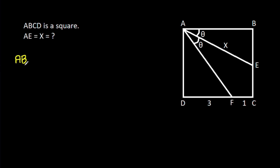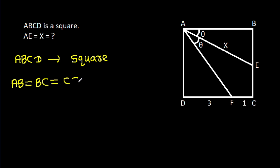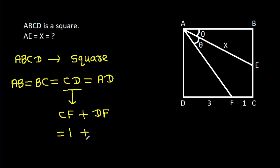ABCD is a square, which means AB = BC = CD = AD. And CD is CF plus DF, which is 1 plus 3, that will be 4. So AB is 4 and AD is 4, and these angles will be 90 degrees.